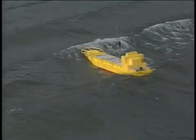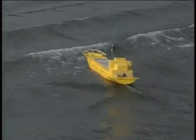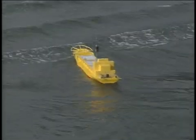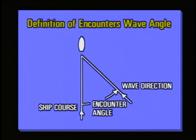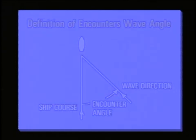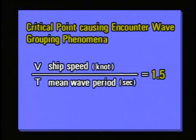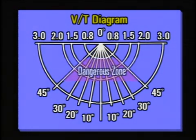To avoid dangerous encounter wave grouping phenomena, it is essential to eliminate the speed conditions that cause such phenomena. As suggested by many experimental results, the most probable condition in which a ship might be caught in dangerous encounter wave grouping phenomena can be expressed by the formula shown here — a combination of encounter angles of the ship to the wave coming from aft, the ship's speed, and the wave period. According to the IMO's ship handling guidance, a dangerous zone is defined as VT being 1.5 as the norm, with a range between 0.8 and 2.0.